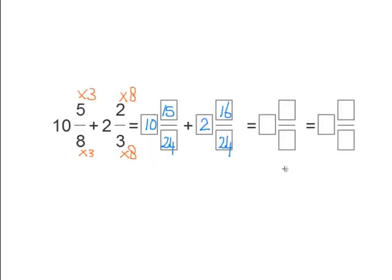Now let's add these up. The denominator is 24. 10 plus 2 equals 12. And now we add 15 and 16, which equals 31.